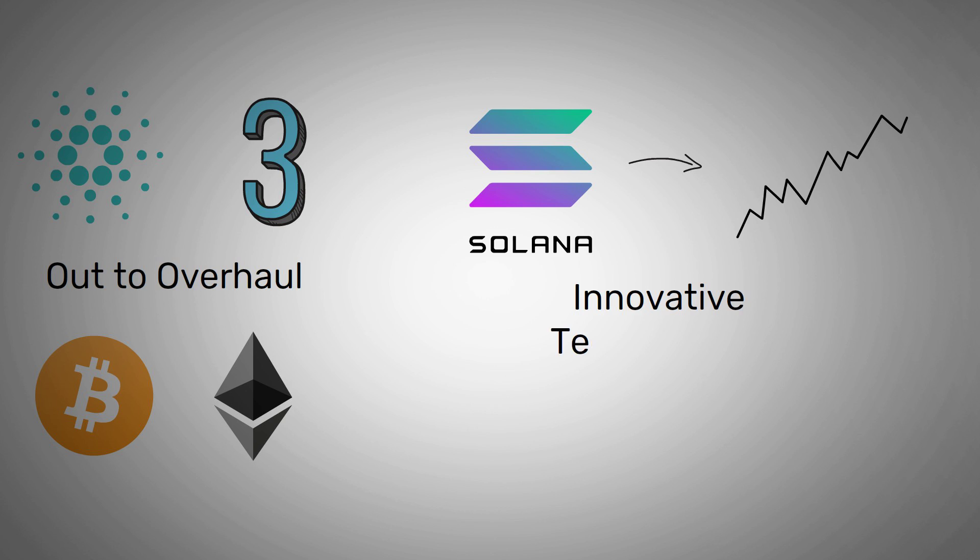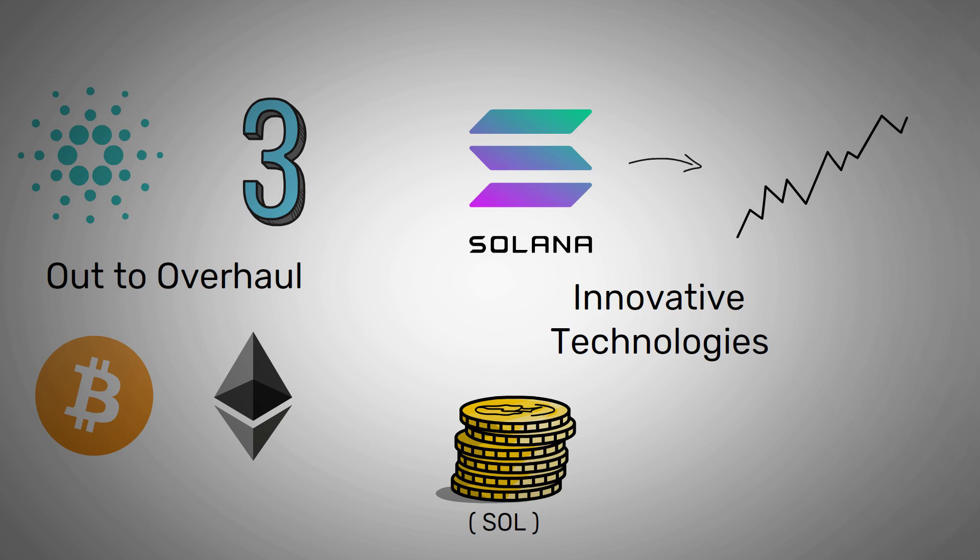Solana's native currency is SOL and has a limited supply of 488.6 million, with nearly 300 million SOLs already in circulation according to CoinGecko.